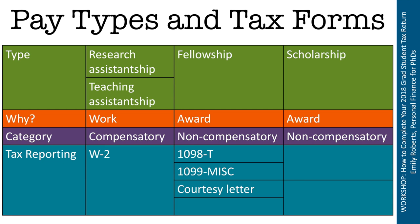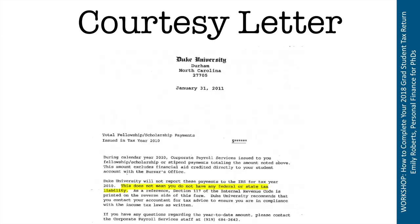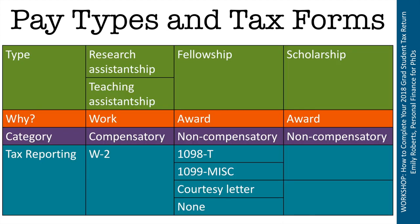A third possibility is not an official tax form at all, but rather a courtesy letter — an informal letter that tells you how much you received in fellowship income in that calendar year. And finally, you may receive absolutely no communication whatsoever regarding your fellowship from your university or funding agency. That is actually pretty common, and it can be really confusing because you might think you don't need to file a tax return. That's not the case — they don't have to provide documentation. If you're receiving a stipend or salary, it's up to you to track down the numbers.